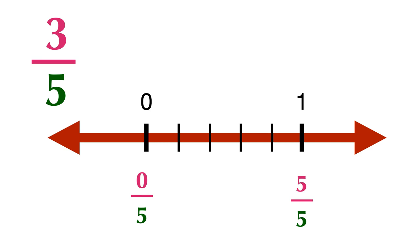To divide a segment into 5 equal parts, you need to add 4 marks to the space between 0 and 1. Look at the numerator — the numerator is 3, so label the third point from 0.